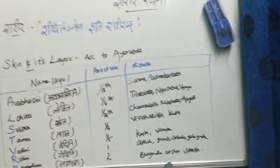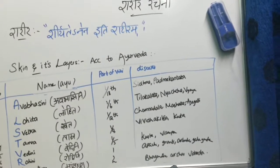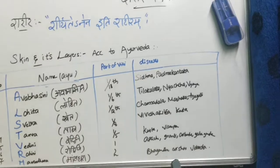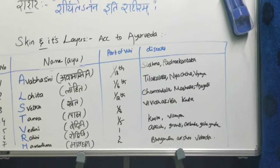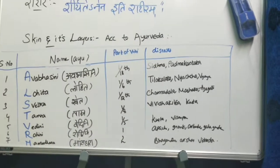The first five layers are strata: corneum, lucidium, granulosum, spinosum, and basalis. The last two are the papillary layer and reticular layer.